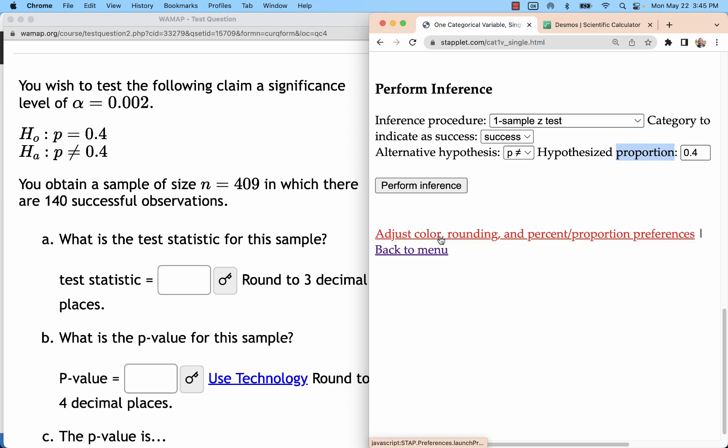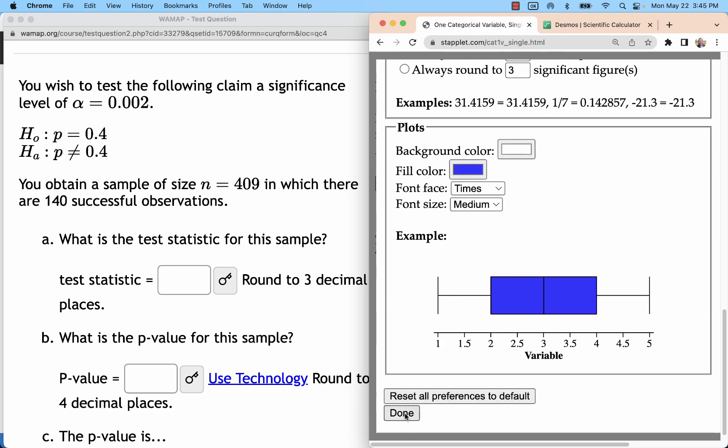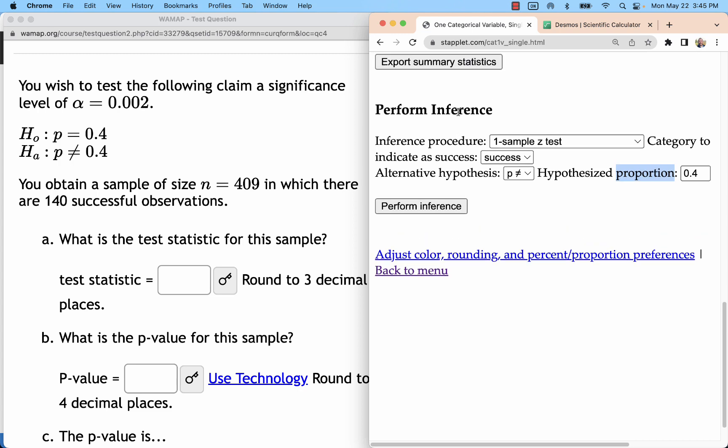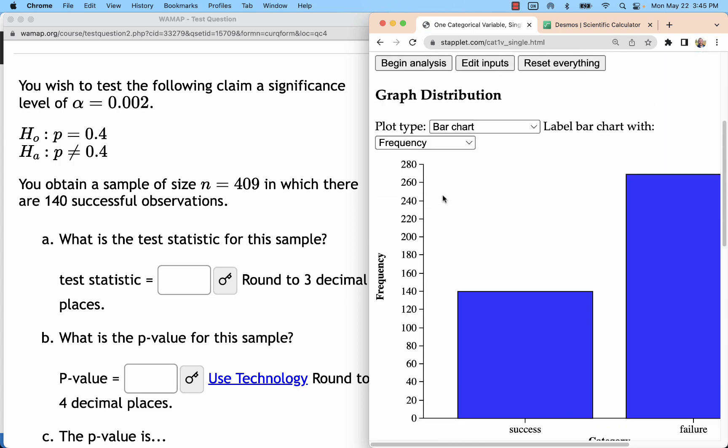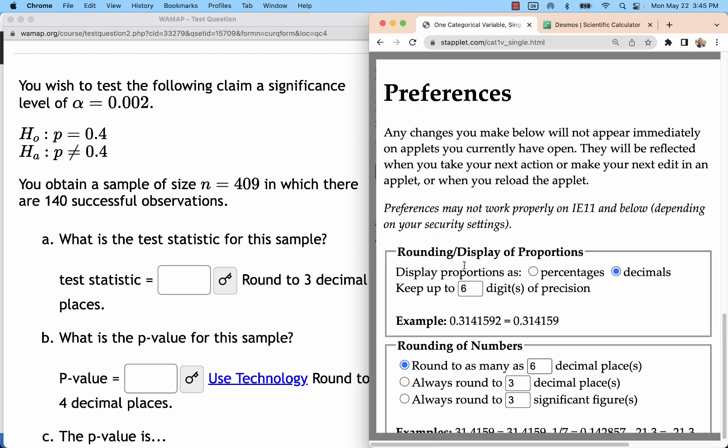You might have this set for percentages, and then when you see percent, you would have to change this to 40. I recommend just setting it to decimals,